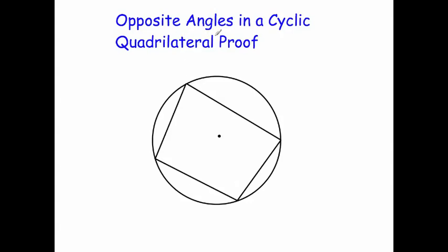In this video we're going to look at the opposite angles in a cyclic quadrilateral proof. In other words, the opposite angles in this cyclic quadrilateral will add up to 180 degrees.